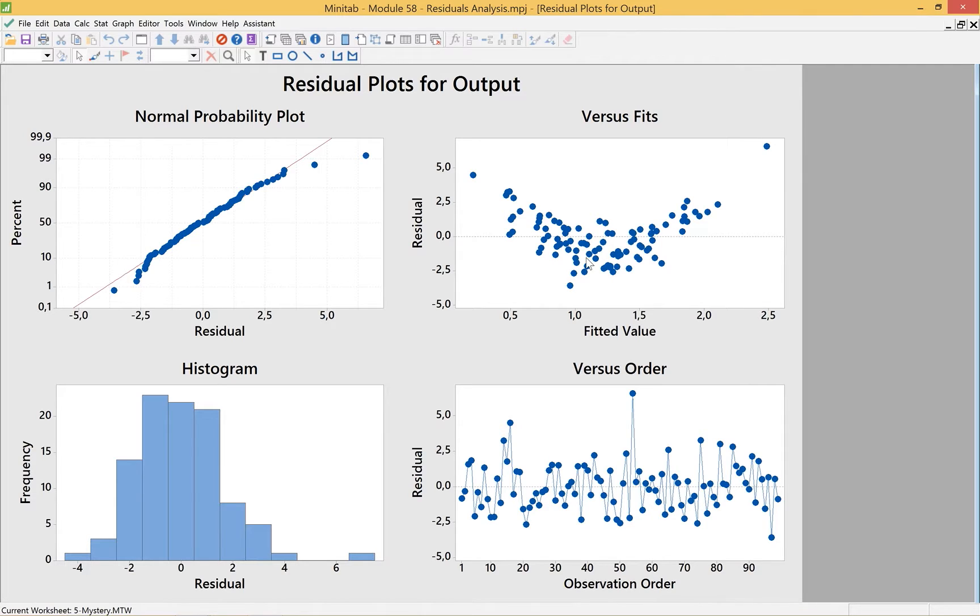Then we take a look at the histogram, and this data should also be normal. Why should data be normal in residuals? Well, if we've explained all of the variation, any variation that's left over should be in a Gaussian distribution. In other words, it's just pure random data. Random data is called white noise, and white noise has a normal distribution.